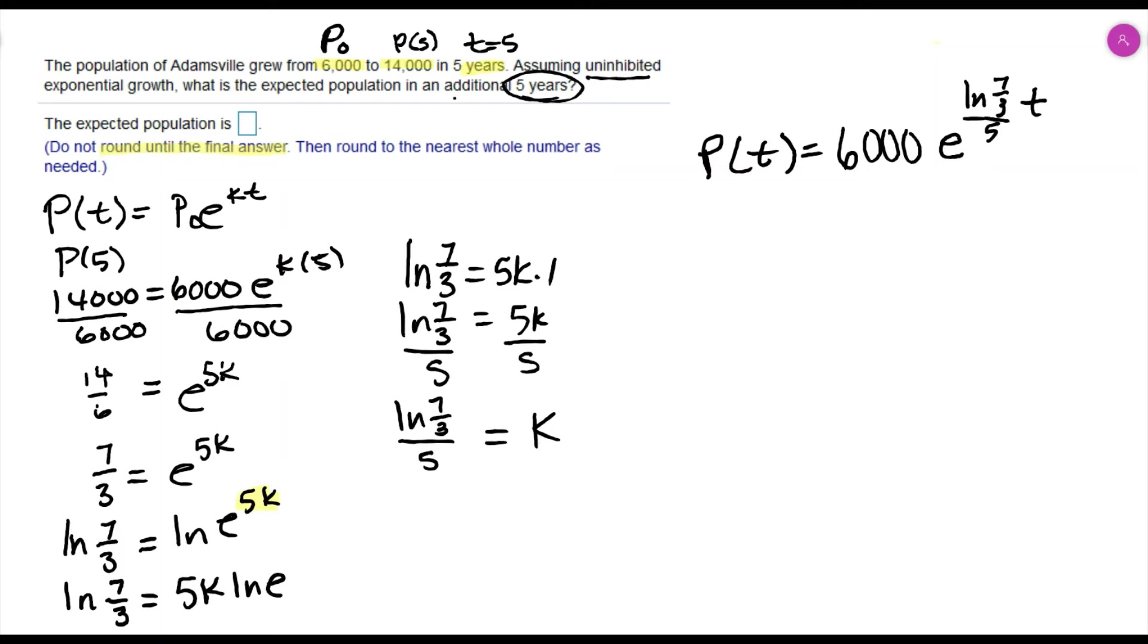This says an additional five years. We had five years to get to 14,000. We want to know the population in another five years, so that's going to be 10 years. We want to do P(10).